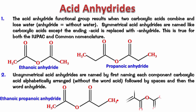Try this next one — pause the video. On one side this is ethanoic, and if you remember, the other side was benzoic. Since benzoic comes before ethanoic alphabetically, this is benzoic ethanoic anhydride.